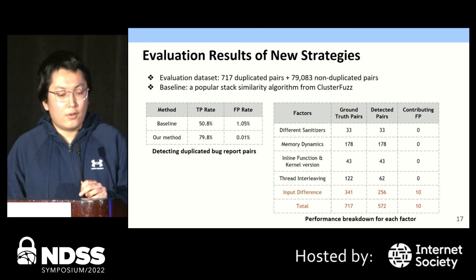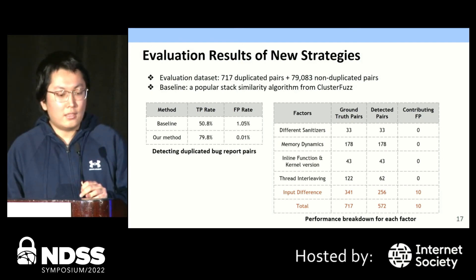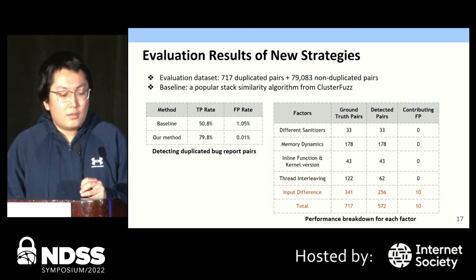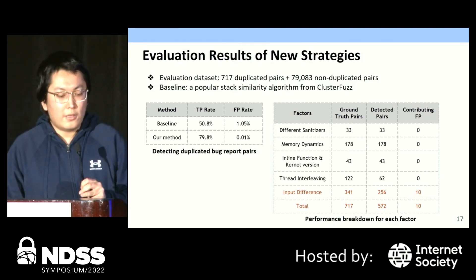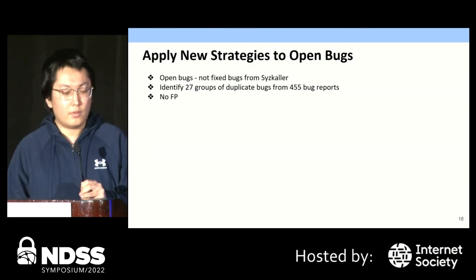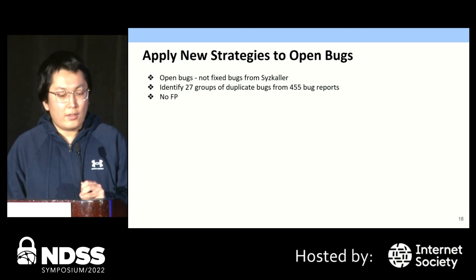We evaluate the strategies for deduplication. Our evaluation dataset has over 700 duplicated pairs and more than 70,000 non-duplicated pairs. The baseline is a popular stack similarity algorithm from cluster files. We don't use Syzkaller's strategy as a baseline because, obviously, our strategy outperforms Syzkaller. The results show that, in general, our strategy has a higher true positive rate and lower false positive rate. The performance breakdown demonstrates that the false positives mainly come from the first factor — input difference — because the performance of our strategy for the first factor relies on the empirical choice of threshold.